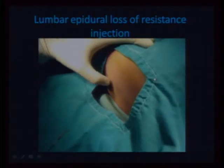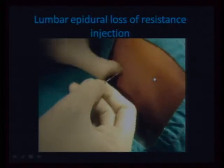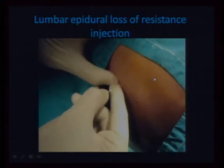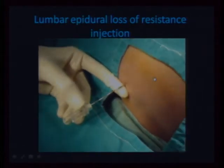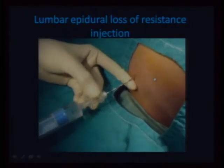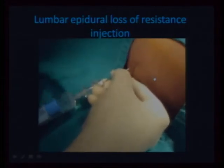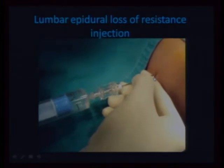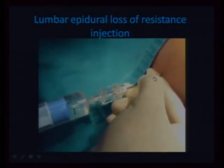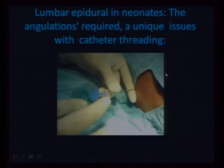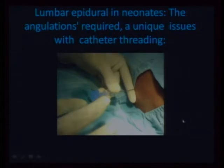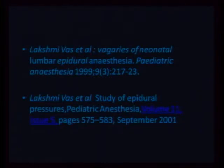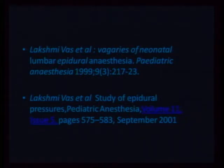So how we would have done this case: palpate, using a 19-gauge needle if possible, the dominant hand holds the needle and we go with continuous pressure on the plunger of the syringe — that's the loss of resistance. Then we pass the catheter through. This video was meant to show the particular angulation required for a neonatal catheter — just a slight angulation that opens up the space for the catheter to be passed through. This was elaborately described by Dr. Vaas in one of her studies.